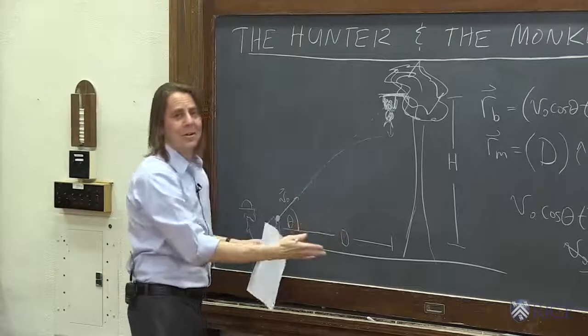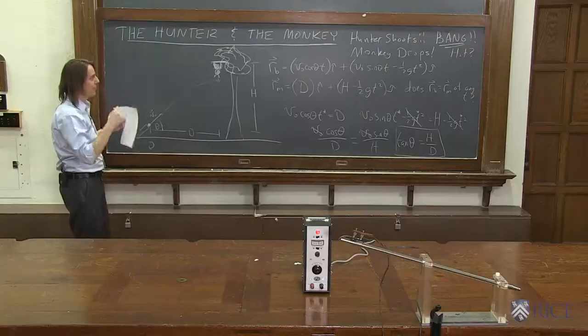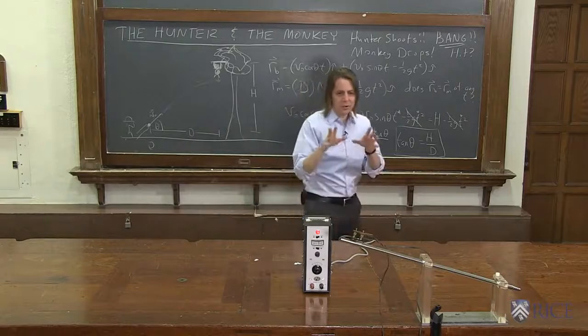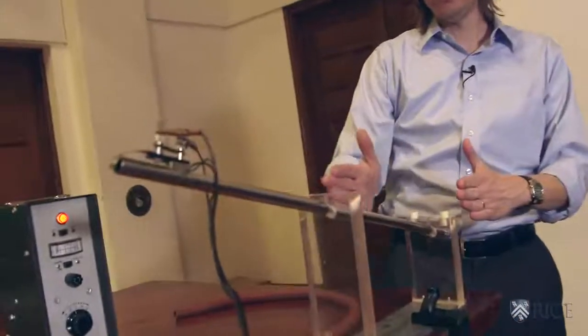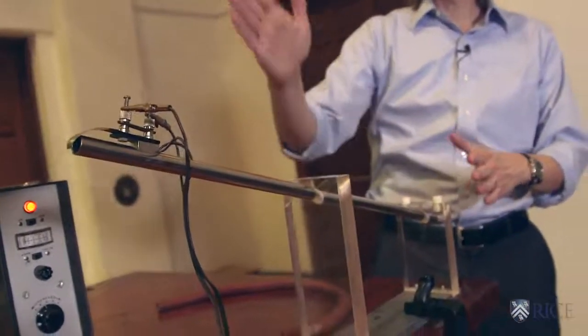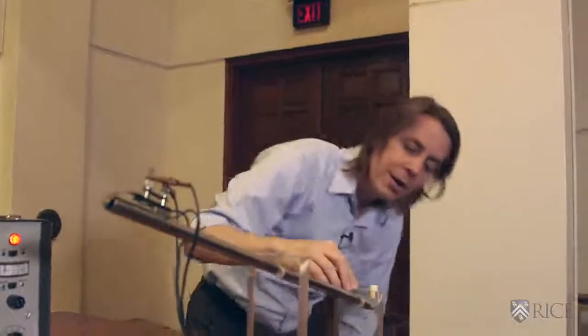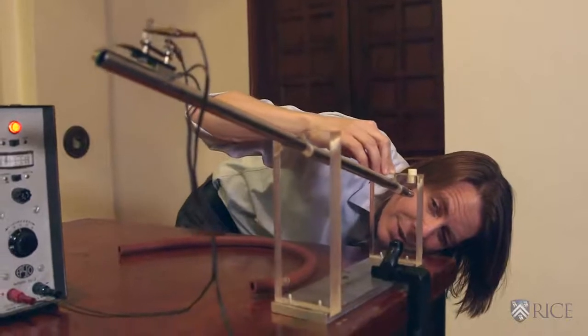So let's see if it's true in the real world. We're going to come around here and shoot the gun. Monkey will drop at the same time. So here at Rice, we like to give the monkey a sporting chance. So we actually shoot him with a blowgun. So here is the blowgun set at the right angle. And then over there, the monkey is hanging from the tree with an electromagnet. So what we need to do is to aim it just right, look in here, and make sure that we see the monkey straight down the tube of the blowgun, and there he is.